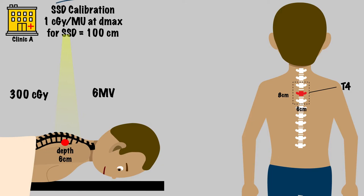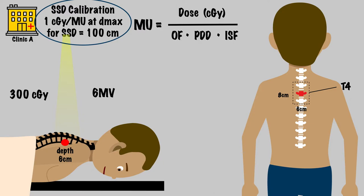First task, understand your clinic's reference conditions. We are told this clinic's reference conditions are to deliver 1 centigrade per monitor unit at Dmax for a 100 centimeter SSD. This will make our monitor unit calculation easier since we are using an SSD setup and the inverse square factor will therefore equal 1. In this case, there is only one beam, so we put the total fractional dose of 300 centigrade in the numerator. We'll use PDD here since this is an SSD setup. The PDD and output factor will be obtained using the clinic lookup tables once we have the equivalent square field size.